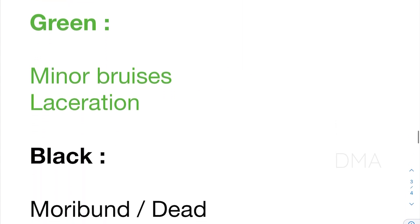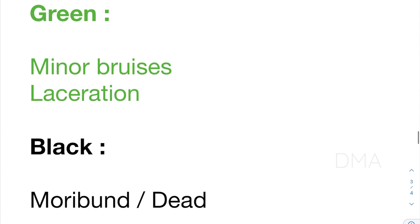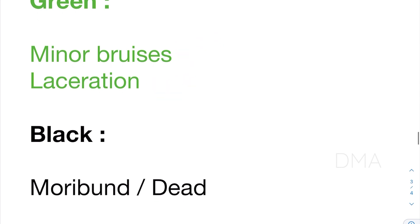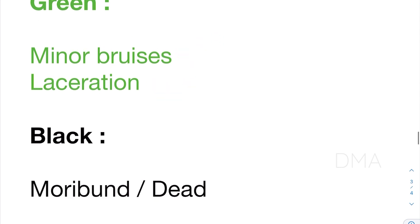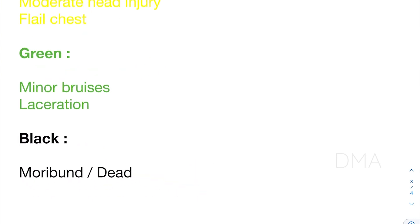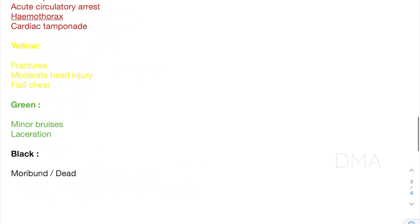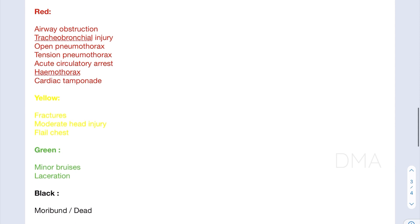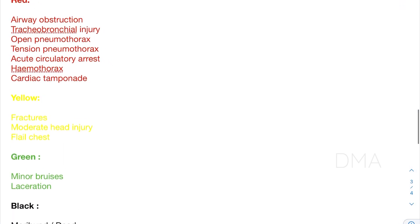Green category patients are the ones who have sustained minor injuries, bruises, and lacerations, and who are able to walk by themselves. Finally, the black category patients are either dead or in a very moribund condition. That covers triage color coding — hope this was helpful. Thank you so much.